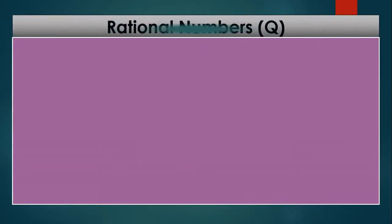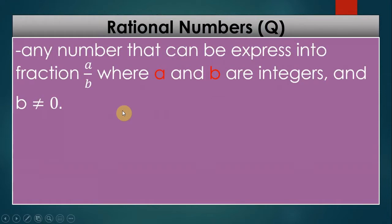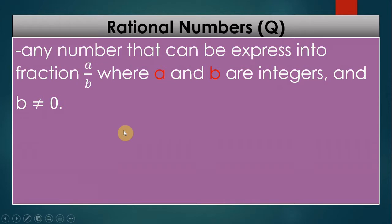Another set of real numbers is what we call rational numbers. Rational numbers are represented by the letter Q, capital Q. The meaning of this is any number that can be expressed as a fraction A divided by B, where A and B are integers and B is not equal to zero. Another way of saying it: all numbers that can be expressed as fractions are called rational numbers.